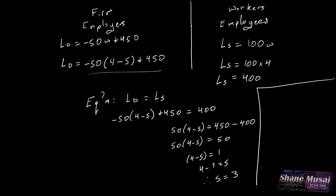The new equilibrium in the market is at a wage of $4 and employment of 400. The question also asks for the total subsidy being paid. If the subsidy is $3 per worker and 400 workers are employed, then 3 times 400 equals $1,200. So the total cost of the subsidy is $1,200 per hour.